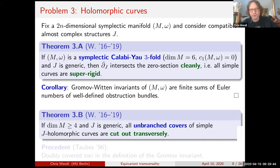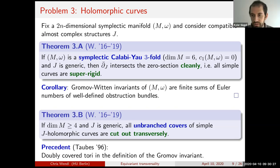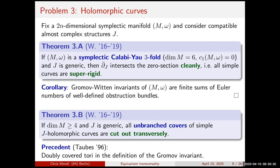Another theorem using similar techniques: in dimension at least four, for generic J all unbranched covers of simple J-holomorphic curves are cut out transversely — they're Fredholm regular. A precedent for this comes from that Taubes paper: the Gromov invariant was defined as a count of certain embedded holomorphic curves plus doubly covered holomorphic tori, and he proved those doubly covered tori are actually cut out transversely without virtual methods. That result is now a special case of theorem 3b here, and my proof is also a generalization of the ideas from that paper.